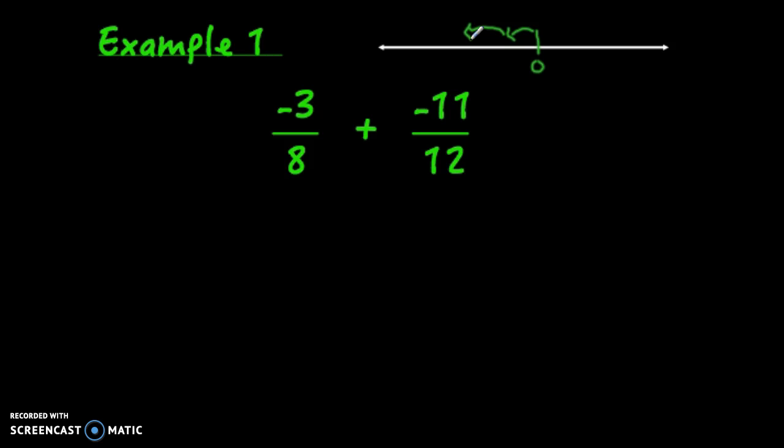They're both going in the negative direction, so I'm going to add 3/8 plus 11/12, but remember that the final answer is negative. The first thing to look for is a common denominator, something that 8 and 12 both go into. 8 doesn't go into 12, but the next multiple, 24, works for both. So 24 makes a good common denominator.